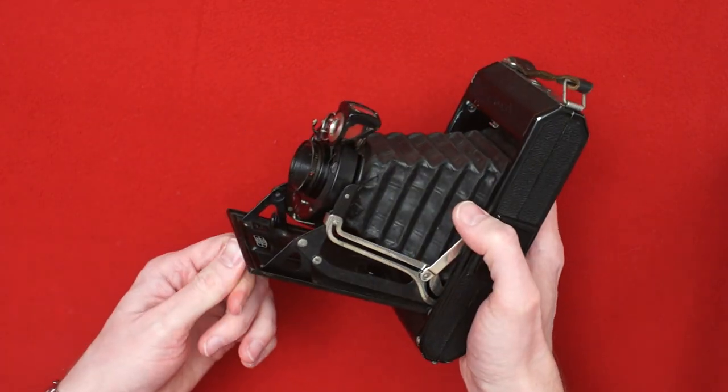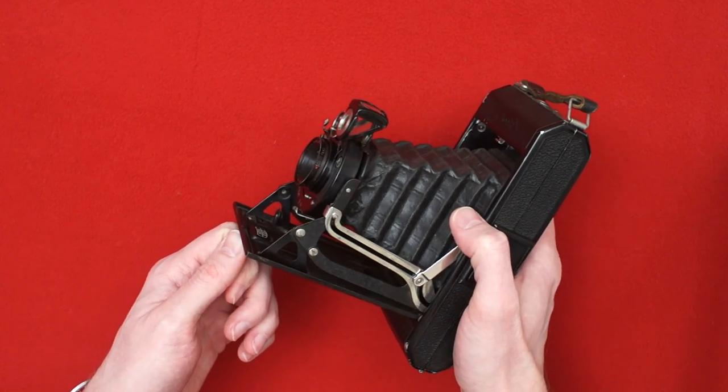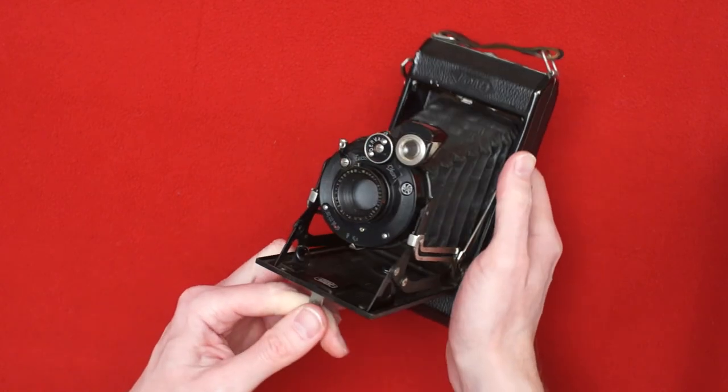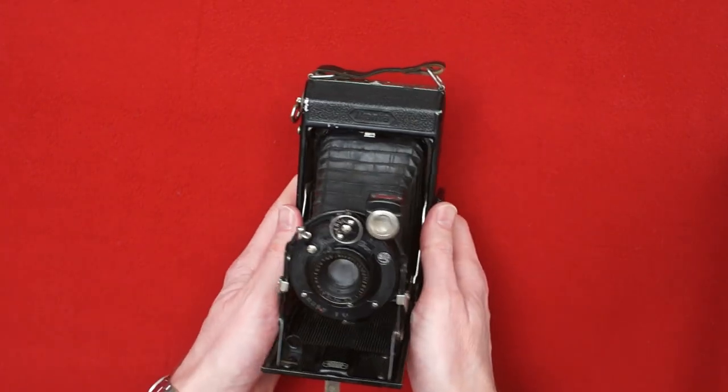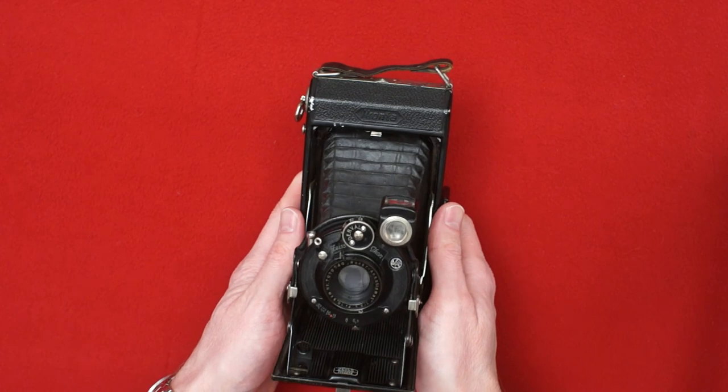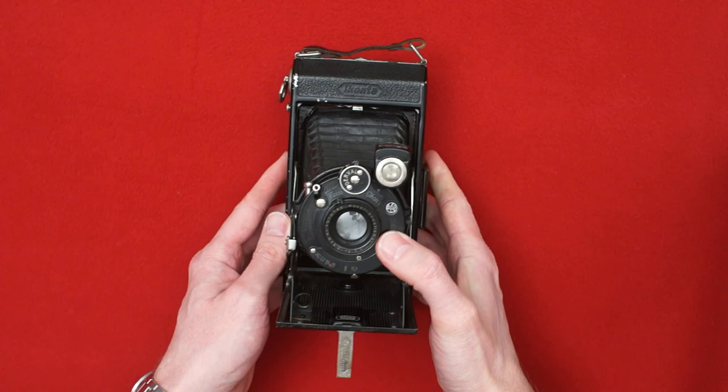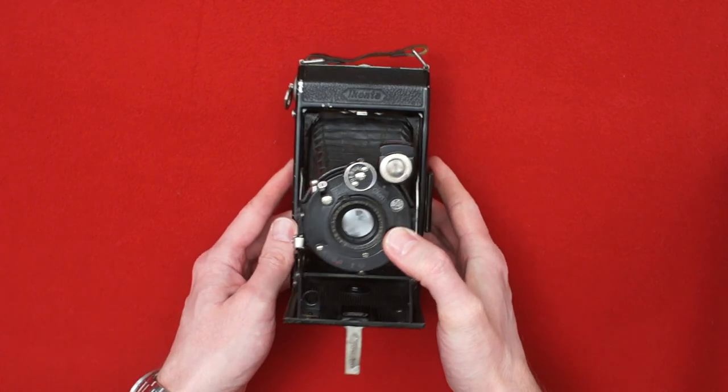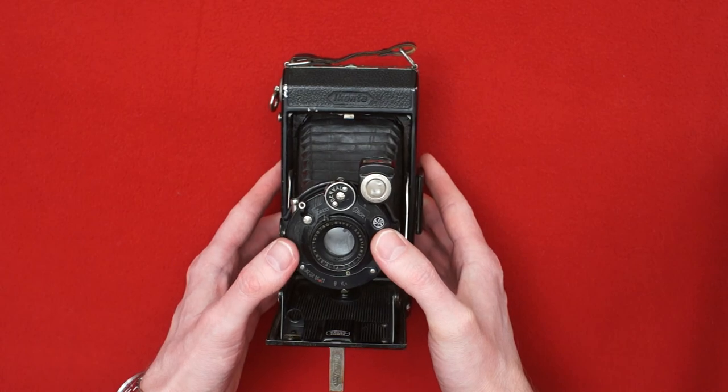And this camera, in 1932, this camera was listed. The price in the catalog was 43 Reichsmarks. Now, the more expensive Tessar equipped version was 99 Reichsmarks, so more than twice as expensive.